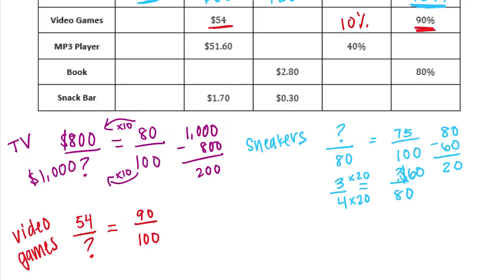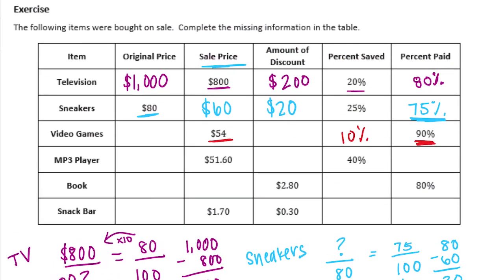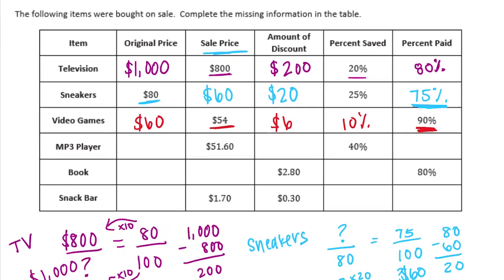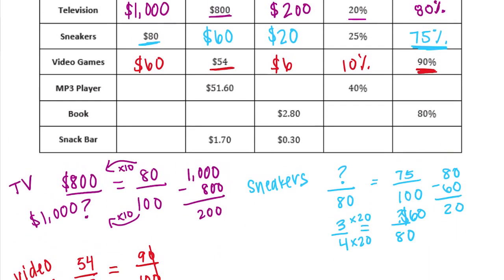We can't get from 54 to 90 directly, so we reduce to 9/10: 9/10 equals 54 out of something. Since 9 times 6 is 54, then 10 times 6 is 60. The original price is $60, and the amount of discount is $60 minus $54, which is $6. So 10% off equals $6.